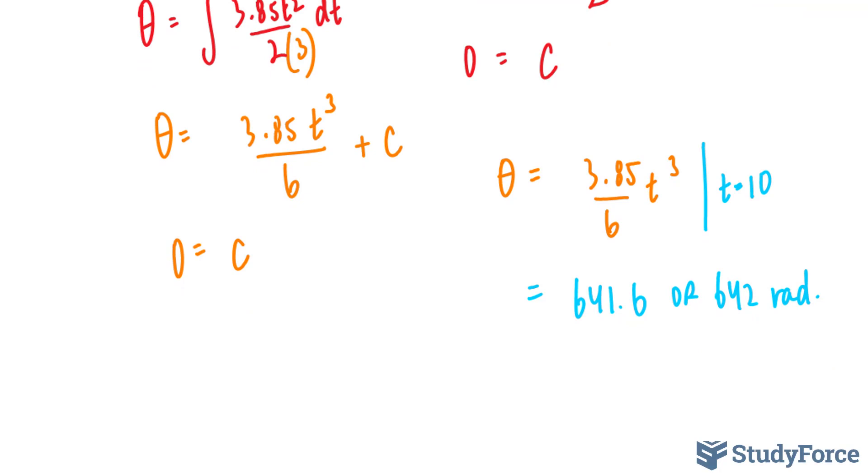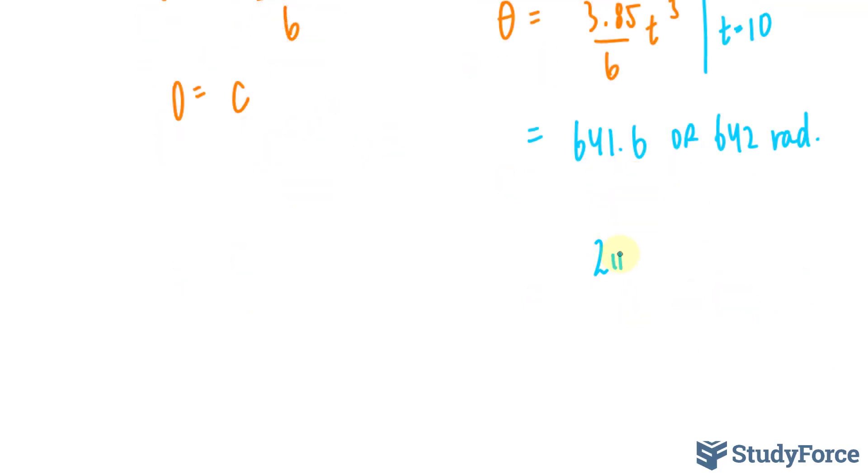The conversion ratio to convert from radians to revolutions is the following. For every 2 pi radians, you get 1 revolution.